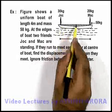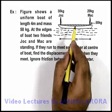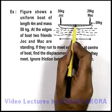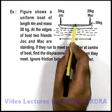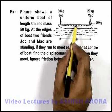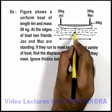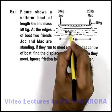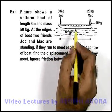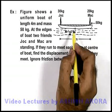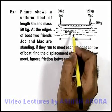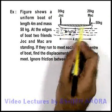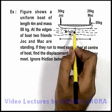When they meet at the centre, with respect to the boat, Jock will travel a displacement of 2 meters toward the right and Mac will travel a displacement of 2 meters toward the left. Let us assume the boat is displaced toward the left by distance x, so as to keep its centre of mass at rest. Because if no external force is acting, the internal forces due to which Jock and Mac are moving will not shift the centre of mass.